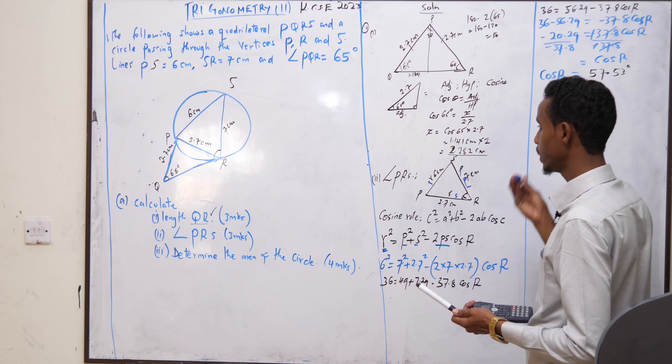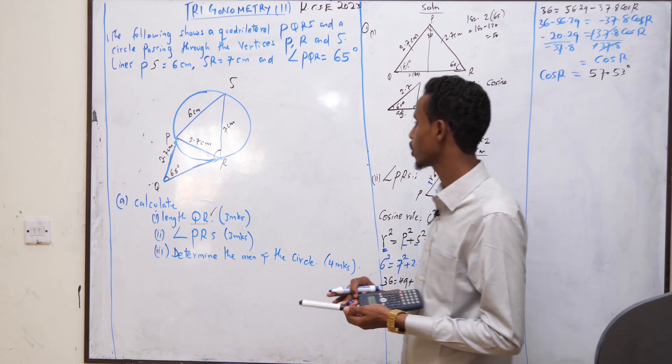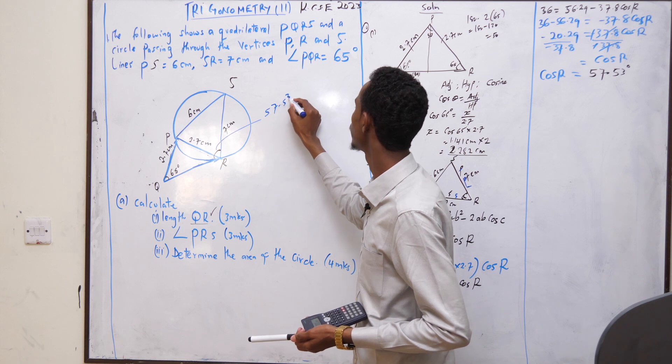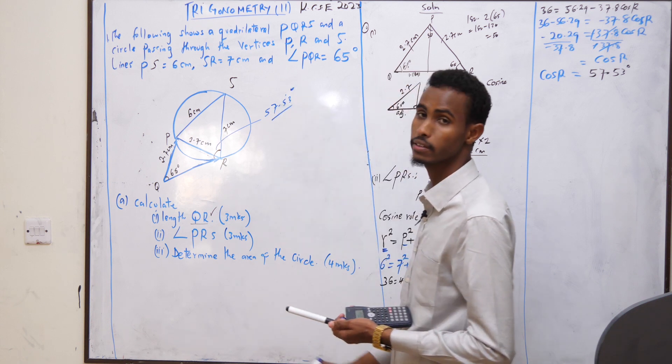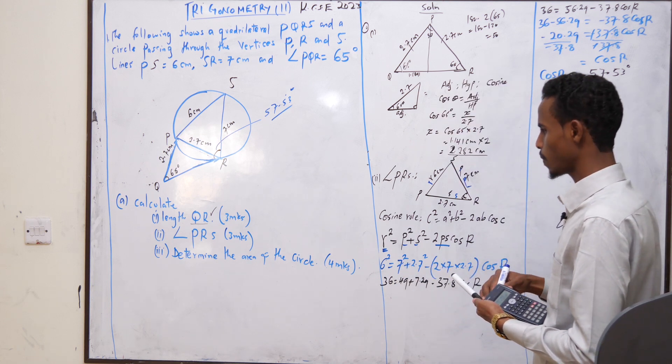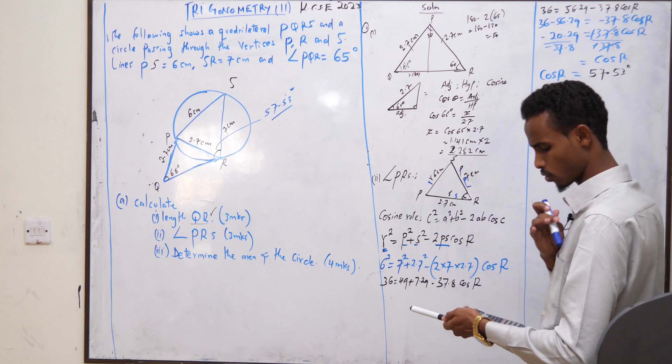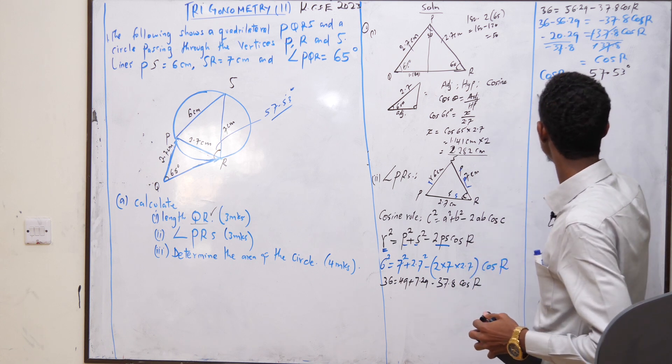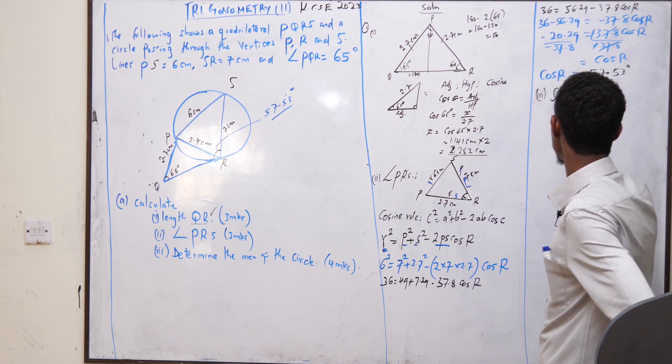Therefore, the angle here, this angle now becomes 57.53 degrees. Finally, determine the area of the circle. Now, part 3, sine rule.